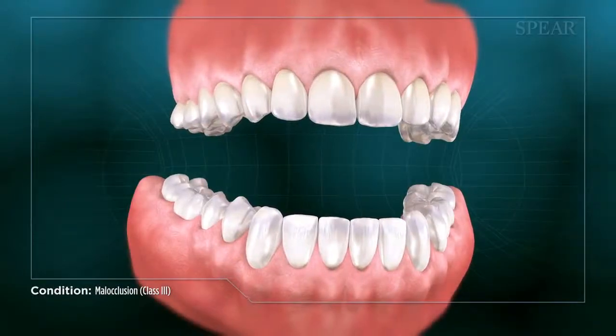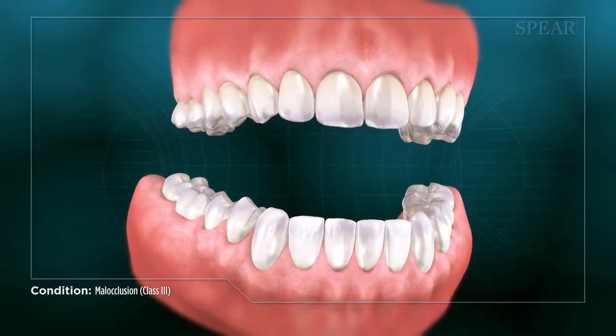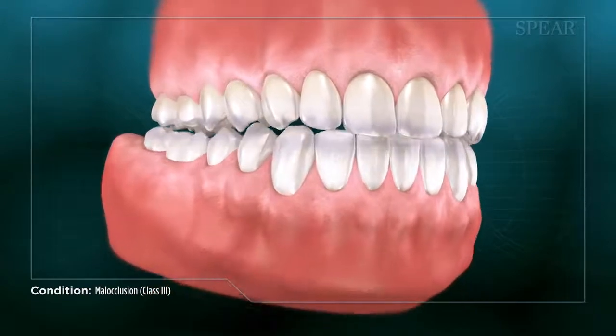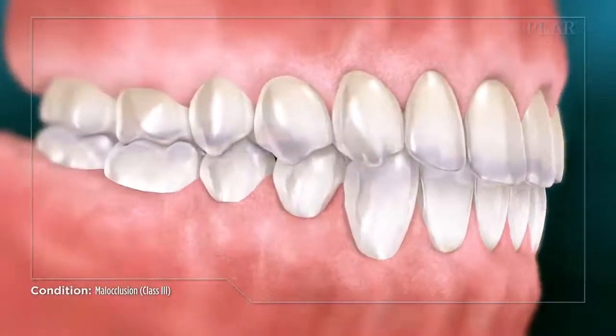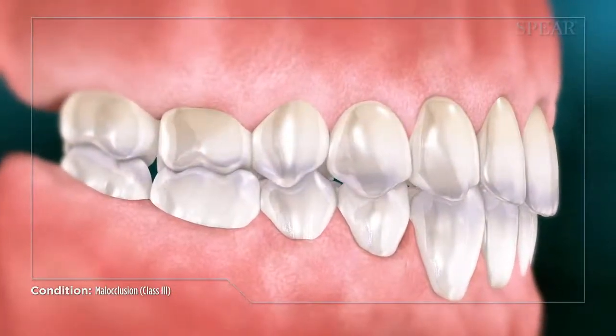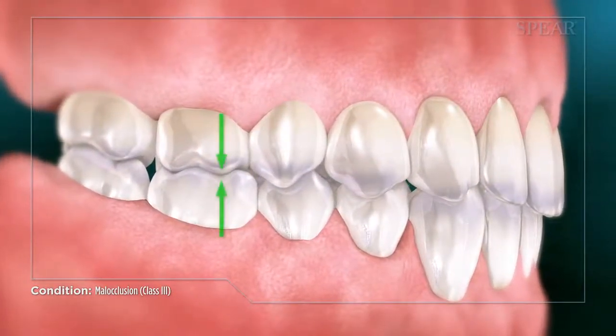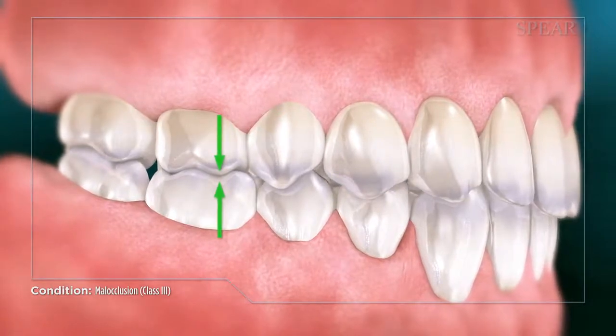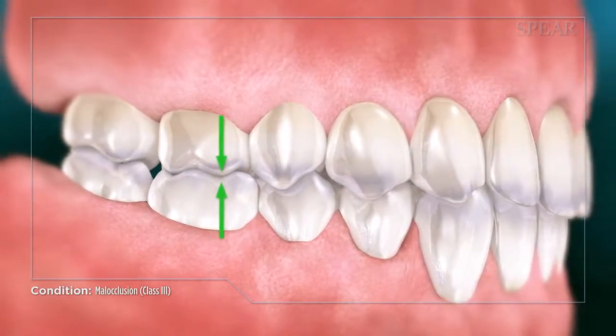Occlusion is a term dentists use to describe how teeth come together. When a patient has proper occlusion, it means that their teeth touch as intended, much like gears coming together in an engine.